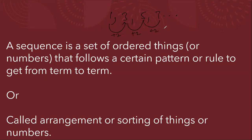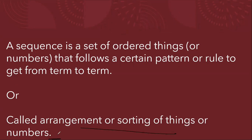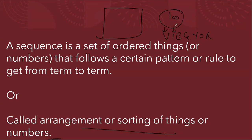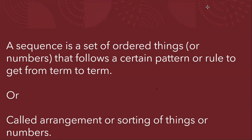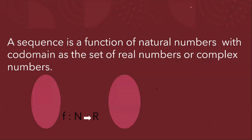Every successive term is completely dependent upon the previous term. So a sequence is an arrangement of things or numbers with a certain pattern. For example, if you have a hundred shirts in an almirah and arrange them in VIBGYOR order — first violet, then indigo, then blue, then green, then yellow, then orange, then red — that is a set pattern, and that is a sequence.